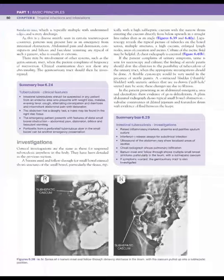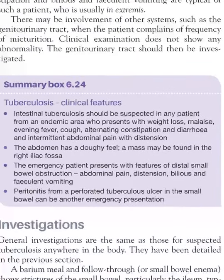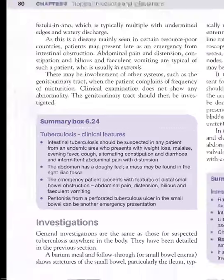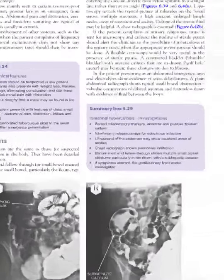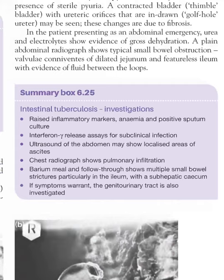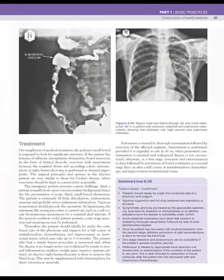Patients may present with weight loss, malaise, evening fever, cough, alternating constipation and diarrhea, and intermittent abdominal pain. The abdomen is doughy due to ascites, and in resource-limited settings, patients may present with intestinal obstruction or peritonitis. Investigations show raised inflammatory markers, raised ESR, and positive sputum culture. Ultrasound may show ascites, and barium meal with follow-through may show strictures with a subhepatic cecum.